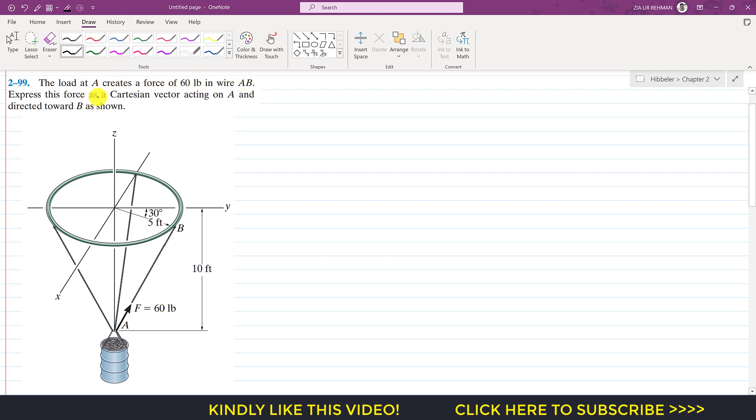Express this force as a Cartesian vector acting on A and directed toward B as shown. So we need to represent this 60 pound force which is acting from A to B as a Cartesian vector.